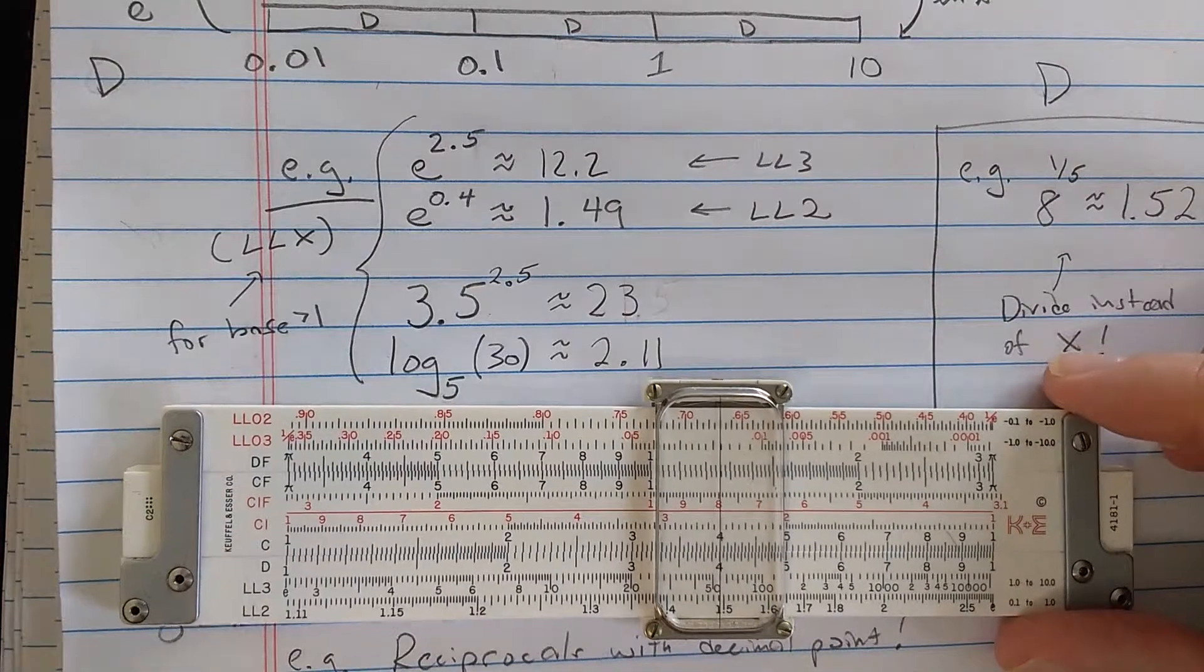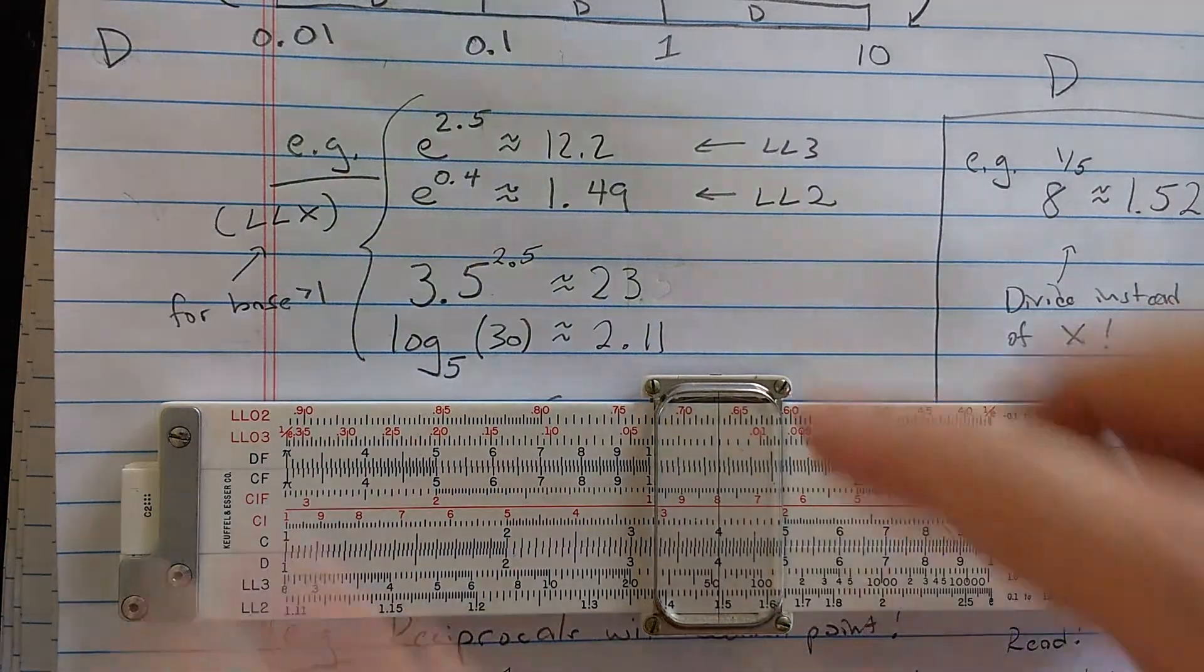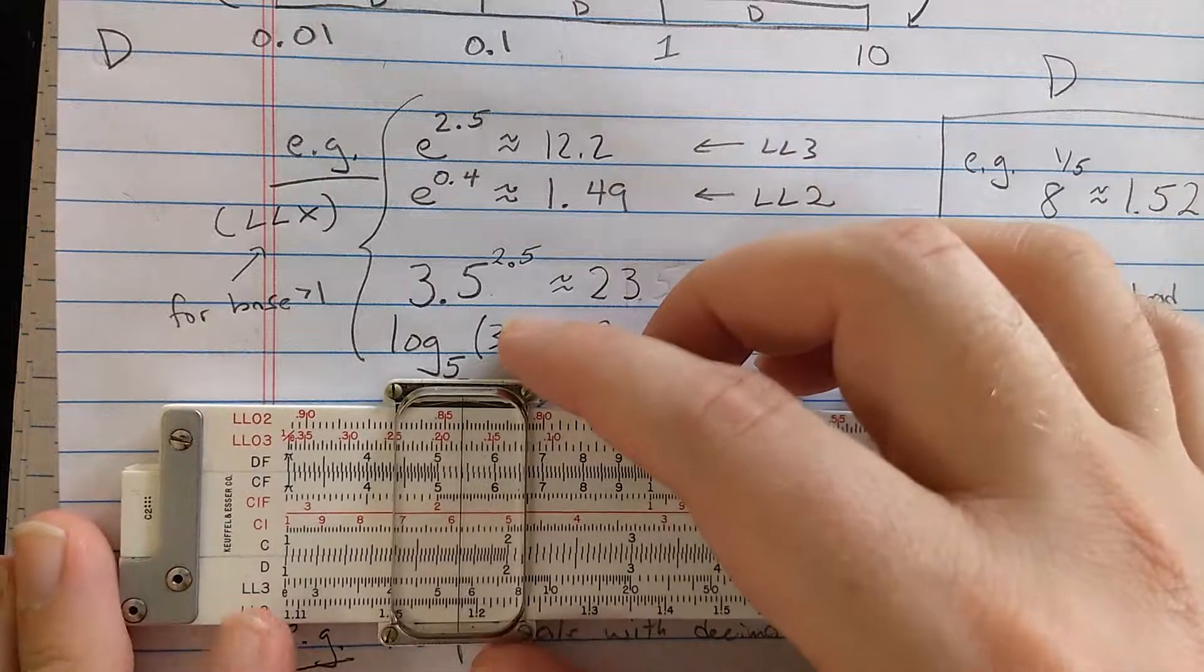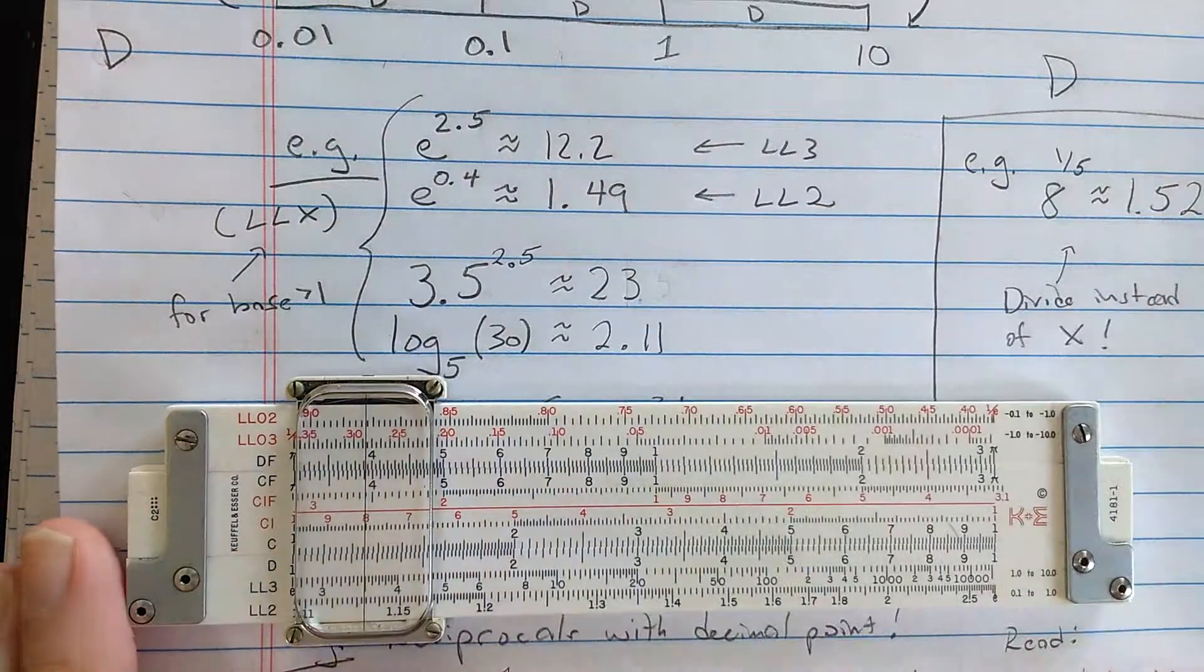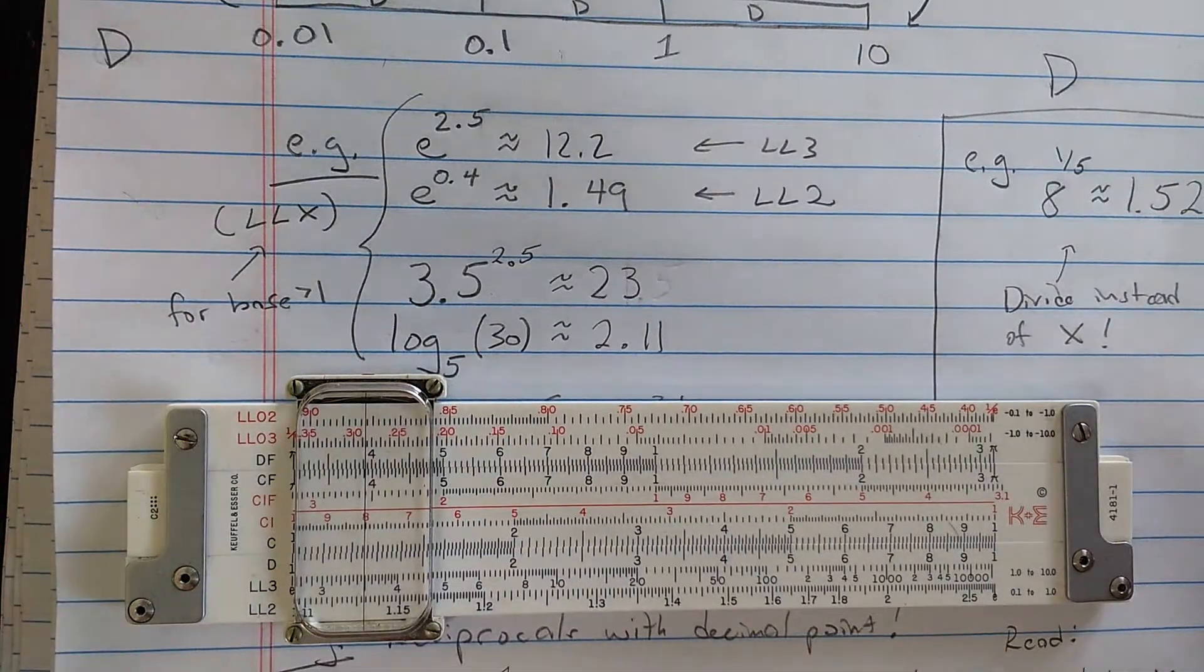Now you can compute arbitrary exponentials by doing the following thing. So let's find 3.5, the base, on log-log 3. You would find the base wherever you see it on your log-log scale.